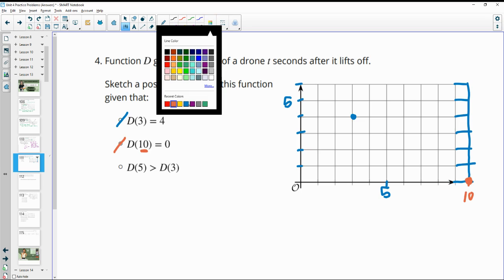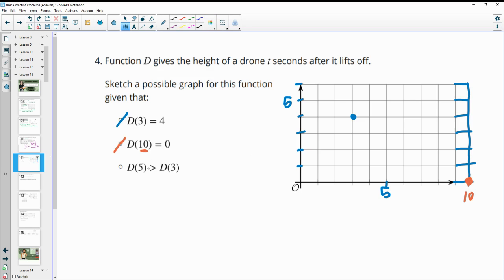Then it says D(5) needs to be higher than D(3). Well, we know that D(3) is 4, so D(5) needs to be something higher than 4. So you can put it anywhere higher than 4. It just needs to cross. This line needs to be above 4. Wherever it touches here needs to be above 4.